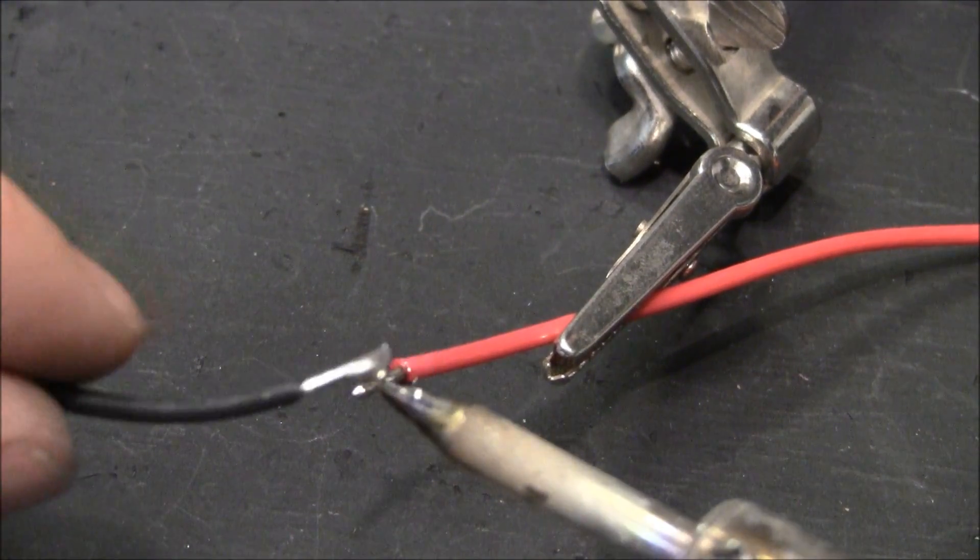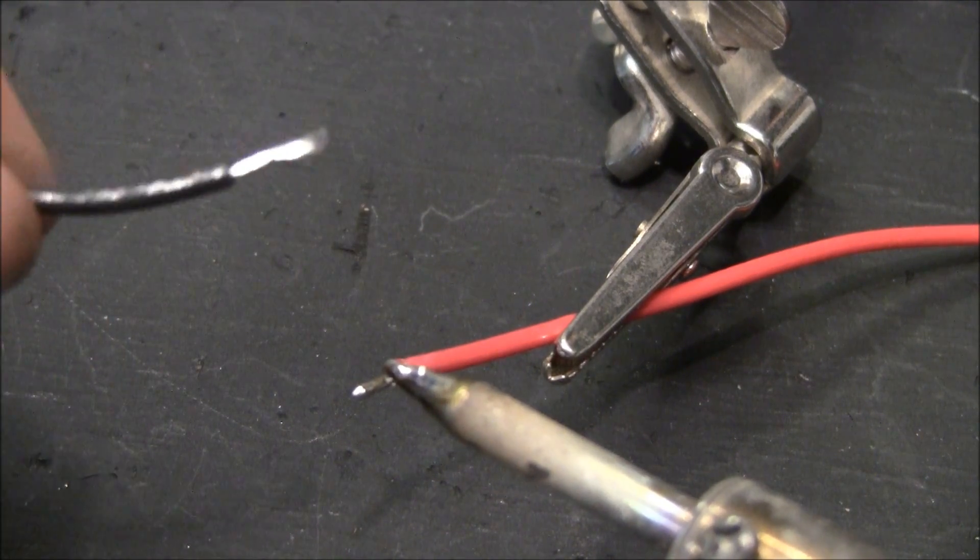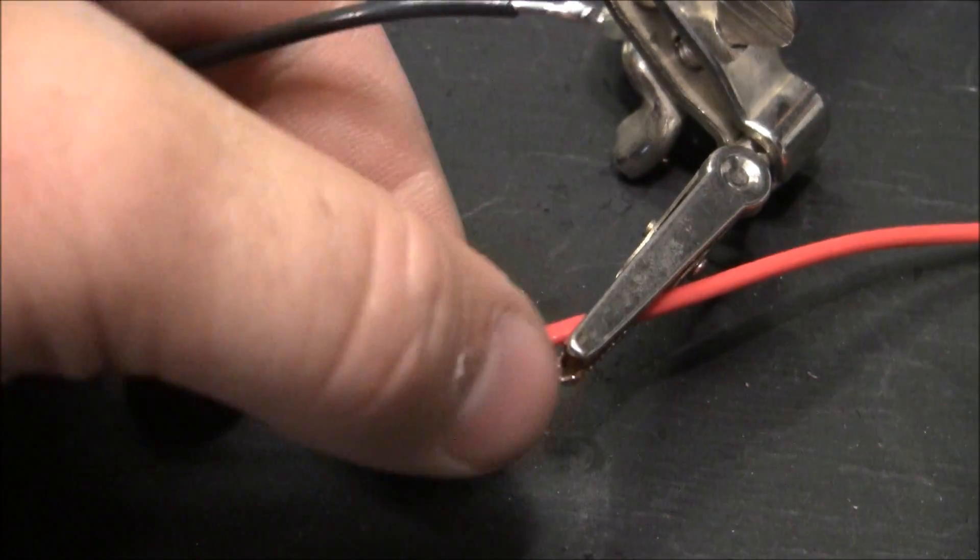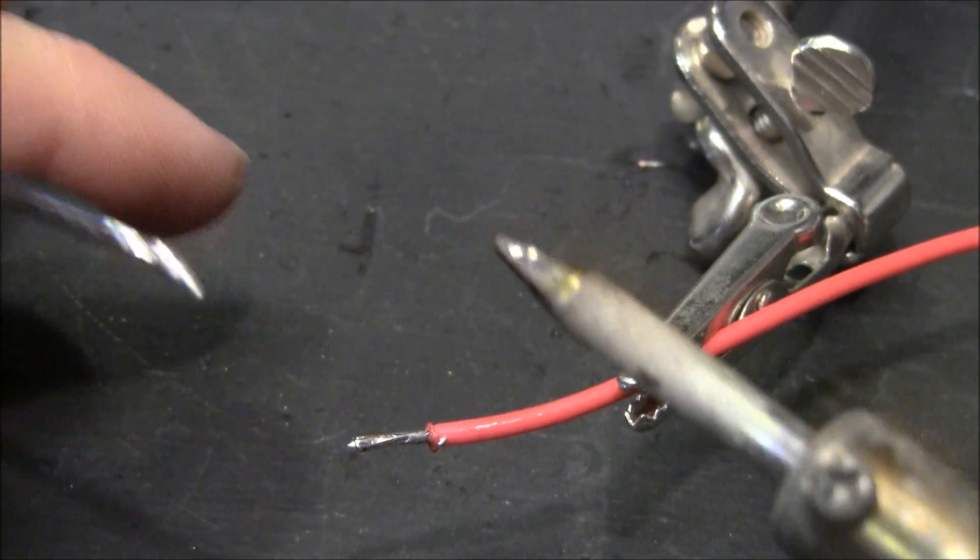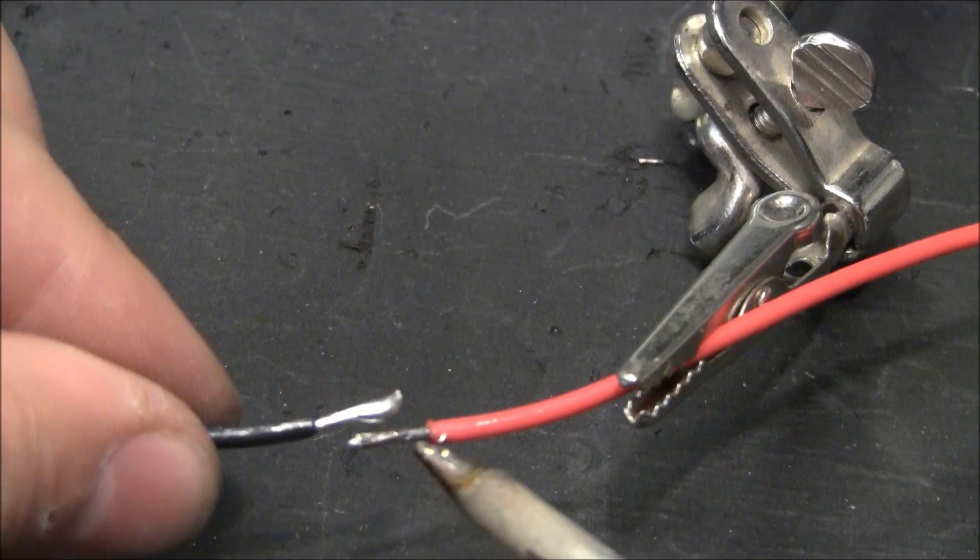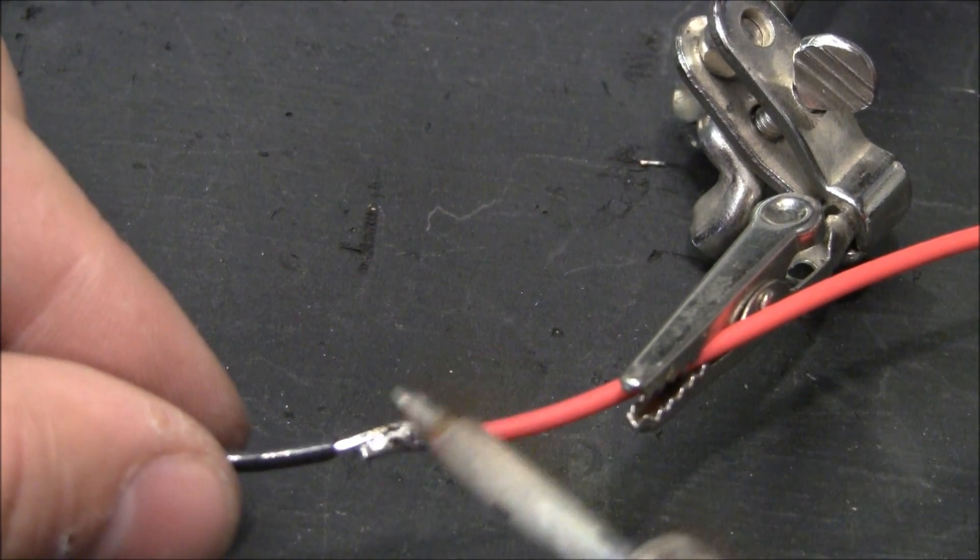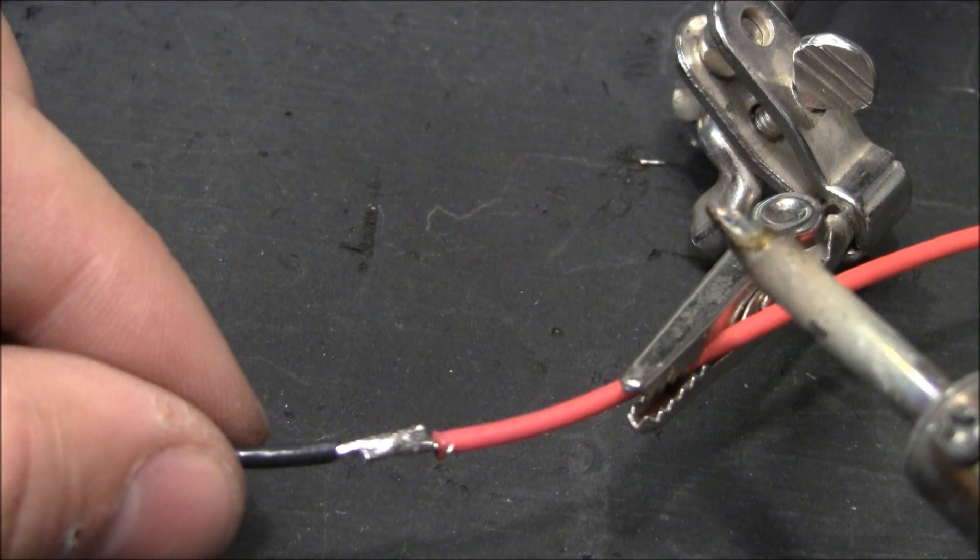Once your wires are tinned very well, you can turn them and make sure that they're tinned all the way around. Then it's pretty simple - just try not to move it as you go ahead and get them hot, and then try to be as still as possible while it cools.